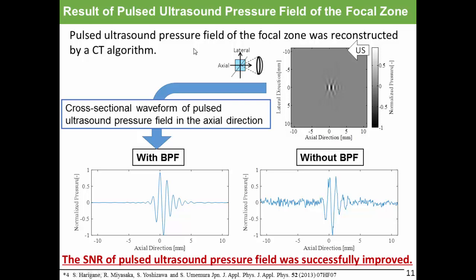Let me show the results of the pulsed ultrasound pressure field reconstructed by CT algorithm. This figure shows the reconstructed pulsed ultrasound pressure field of the focal zone. And these figures show the cross-sectional waveforms of the pulsed ultrasound pressure field without band-pass filter and with band-pass filter in the axial direction. In comparison with the waveforms without band-pass filter, the SNR of the pulsed ultrasound pressure field in this study was successfully improved.